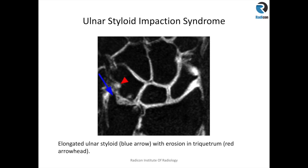Ulnar styloid impaction syndrome occurs where the ulnar styloid process is slightly elongated. With time and micro-repetitive stress, you get cystic changes in the triquetrum with soft tissue reaction, synovial thickening, and marrow edema in advanced cases.